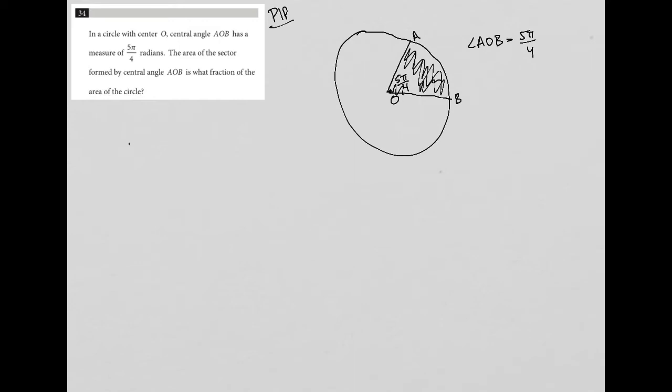Well, the area of a circle is πr². The area of a sector—A for area of a sector—is equal to X over 2π times πr².